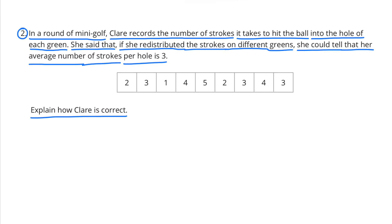Number 2. In a round of mini-golf, Claire records the number of strokes it takes to hit the ball into the hole of each green. She said that if she redistributed the strokes on different greens, she could tell that her average number of strokes per hole is 3. Explain how Claire is correct.